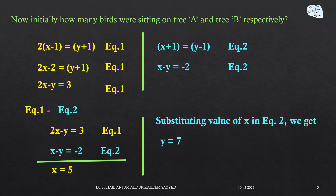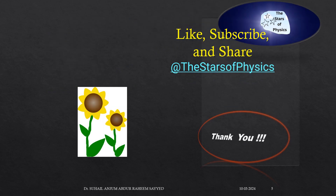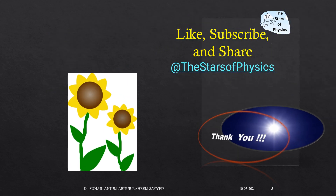We substitute x equals 5 into equation 2 to get the value of y equals 7. So initially x equals 5 and y equals 7, meaning 5 birds were sitting on tree A and 7 birds were sitting on tree B. If you have any further difficulties, you can ask in the comments. Thank you very much.